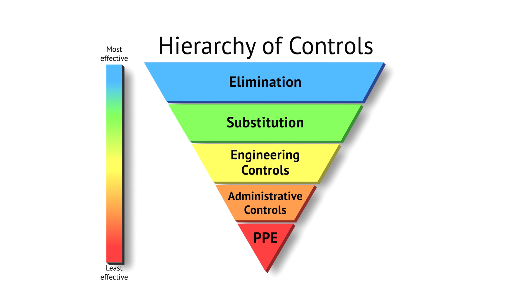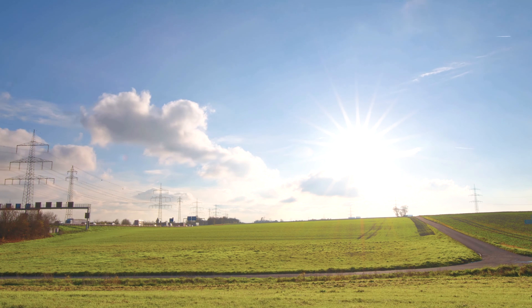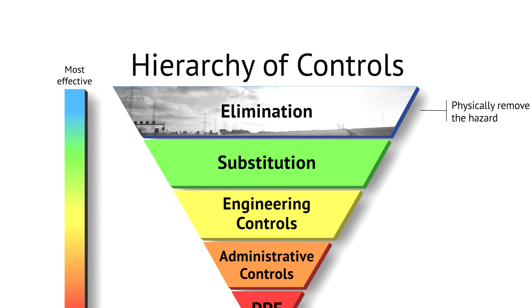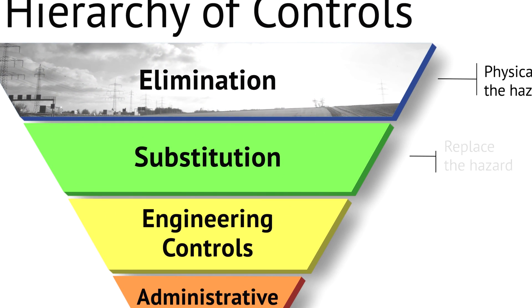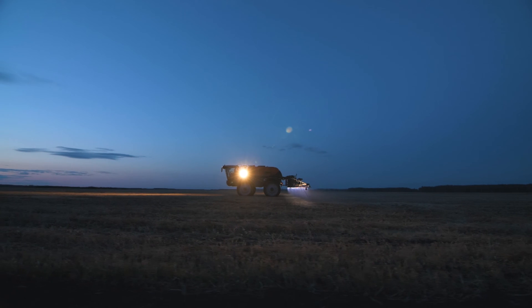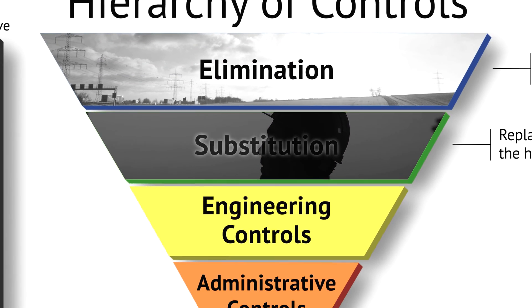Can we eliminate the hazard? The elimination of heat when working outdoors is not always possible. Outdoor exposures are different from indoor exposures and can't be controlled just by the nature of being outdoors. Substitution could mean scheduling work in early mornings or overnight when weather is less of a factor, or mapping heat sources properly.